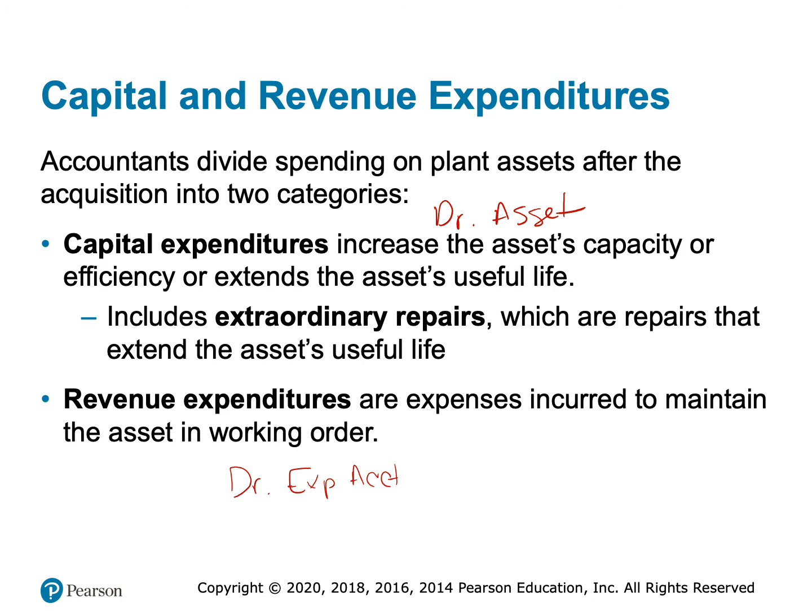A capital expenditure would be something completely out of the ordinary, like having the engine completely rebuilt. For a building, repairing the air conditioner is a revenue expenditure, but converting a garage into a home theater increases the livable capacity of the building — that's a capital expenditure. So the rule is: if it could happen more than once, it's a revenue expenditure; if it's something that will only happen once, it's a capital expenditure.